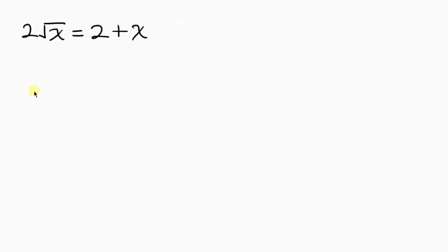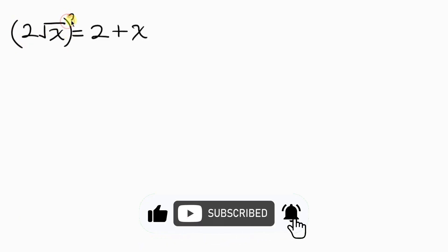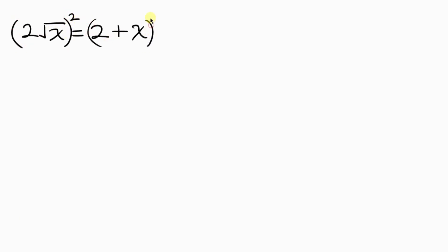Now remember that we want to get rid of the square root. In order to do that we take the square of both sides. This square affects the 2 and also affects the square root of x, so this expression can be written as 2 squared times the square root of x, all squared.